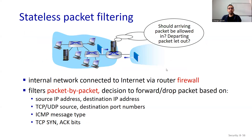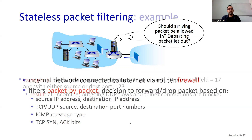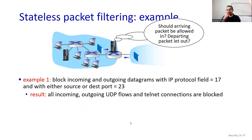The internal network is connected to the internet via a router firewall. It filters packet by packet, with the decision to forward or drop a packet based on source IP, destination IP address, TCP/UDP source and destination port numbers, ICMP message type, TCP SYN, and ACK bits.